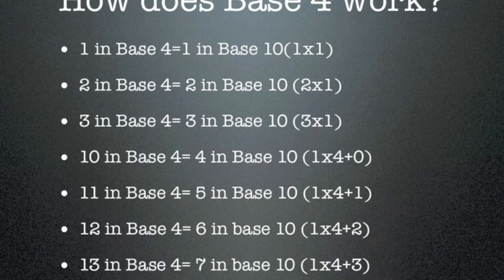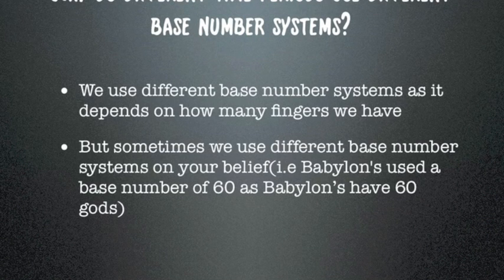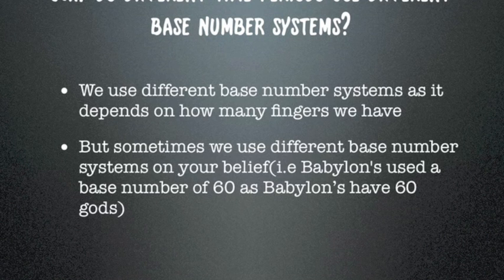This slide shows you how to get some of the possible numbers in the base-four number system. Why do different time periods use different base number systems? We use different base number systems as it depends on how many fingers we have, but sometimes we use different base number systems based on belief. For example, Babylonians use the base number of 60, as Babylonians have 60 gods.